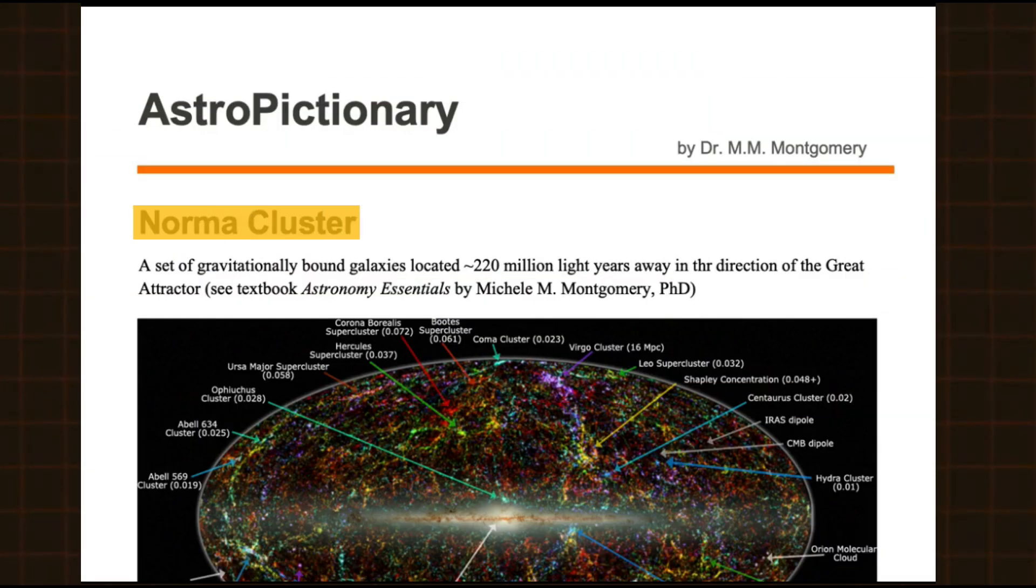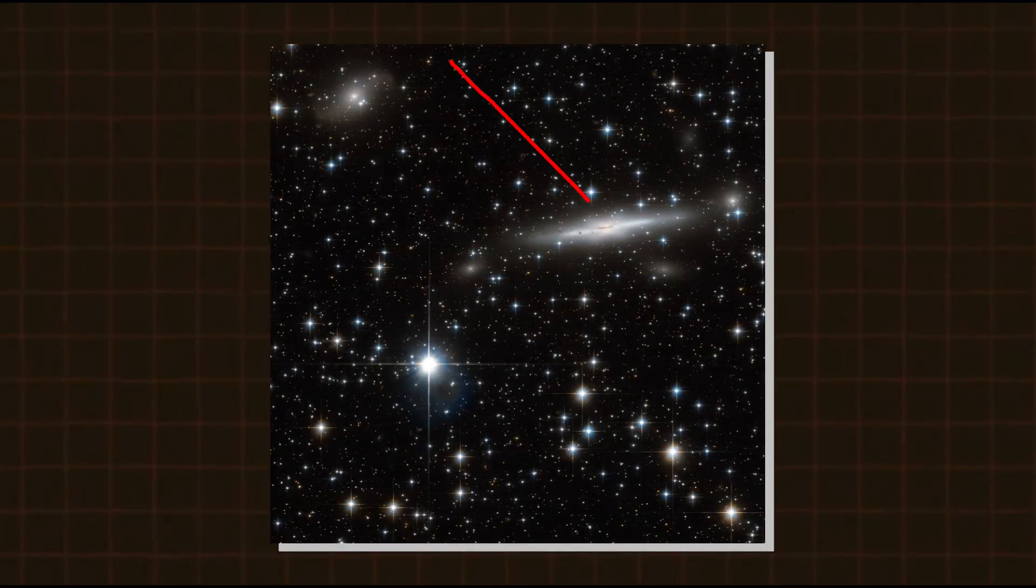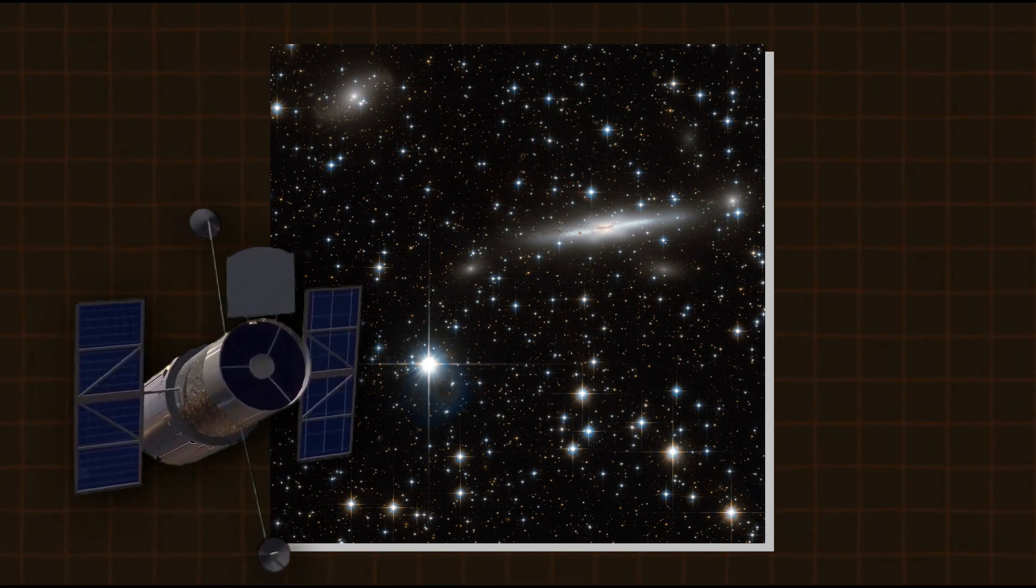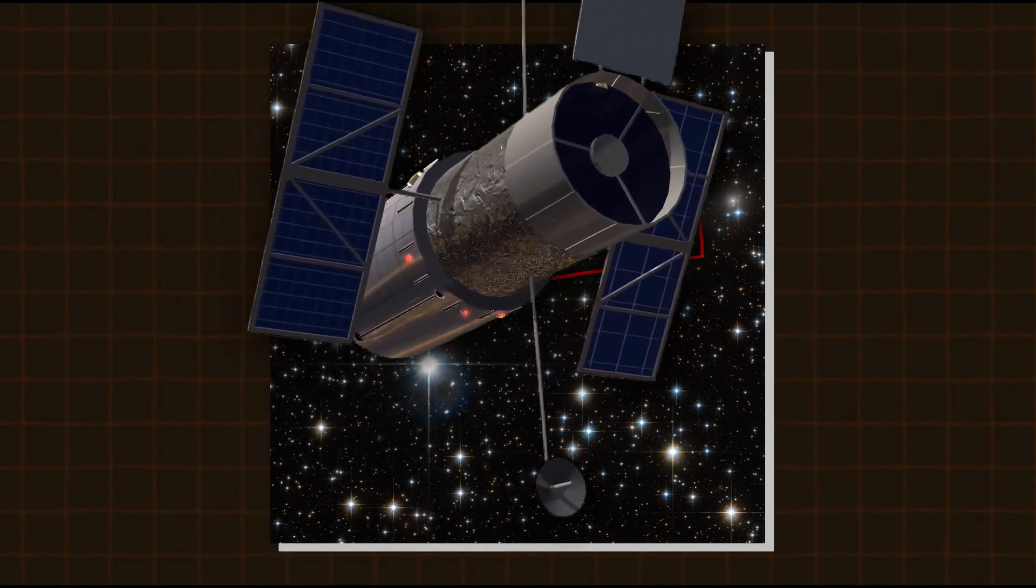The Norma Cluster is the closest massive galaxy cluster to the Milky Way, and it is about 220 million light-years away from us. The largest galaxy that is visible in this image is ESO 137002, which is a spiral galaxy. This image was captured by the Hubble Telescope, and here you can see large regions of dust across the bulge of the galaxy.